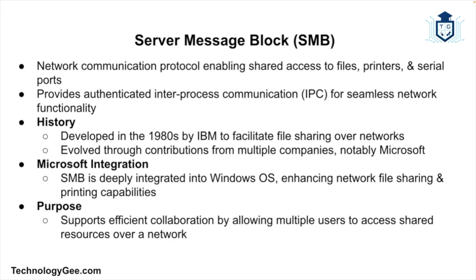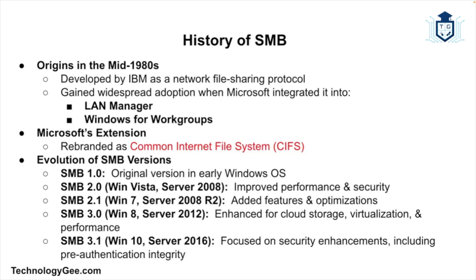The history of SMB can be traced back to the mid-80s when it was first developed by IBM. However, its widespread adoption began when Microsoft started using SMB in its LAN Manager and subsequently in Windows for Workgroups. Microsoft then extended the protocol, calling its version the Common Internet File System. Over the years, SMB has gone through several revisions, starting with SMB 1.0, the original version used in early Windows operating systems.